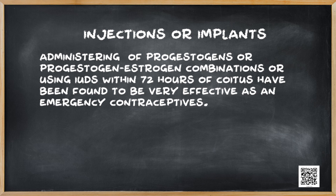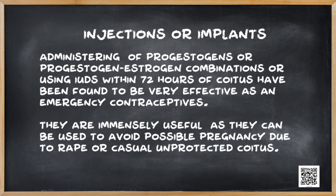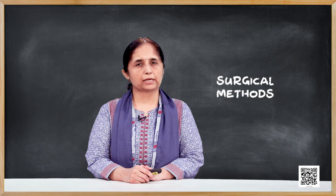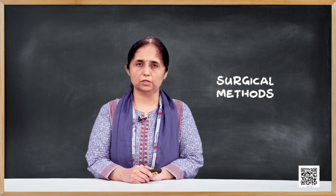Administering progestogens or progestogen-estrogen combinations or using IUDs within 72 hours of coitus has been found to be very effective as an emergency contraceptive. These are immensely useful to avoid possible pregnancy due to rape or casual unprotected coitus. However, their regular use as a contraceptive is inadvisable.